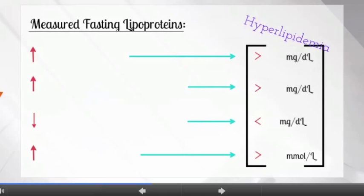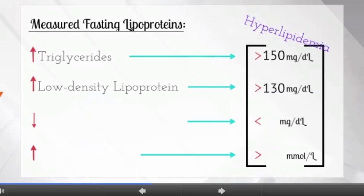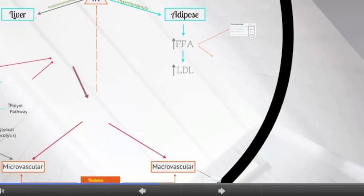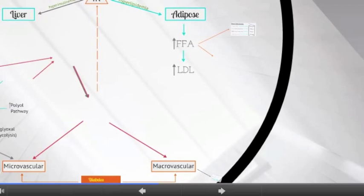Chronically, hyperlipidemia is when triglycerides are greater than 150 mg/dL, low-density lipoprotein increases to greater than 130 mg/dL, high-density lipoproteins decrease to less than 40 mg/dL, and total cholesterol increases to greater than 200 mmol/L. Oxidized LDL forms early atherosclerotic lesions called foam cells after being taken up by scavenger receptor macrophages in the vessel wall, ultimately leading to cholesteryl ester accumulation — also known as fatty streaks — and arterial insufficiency, characteristics evidenced in macrovascular complications.